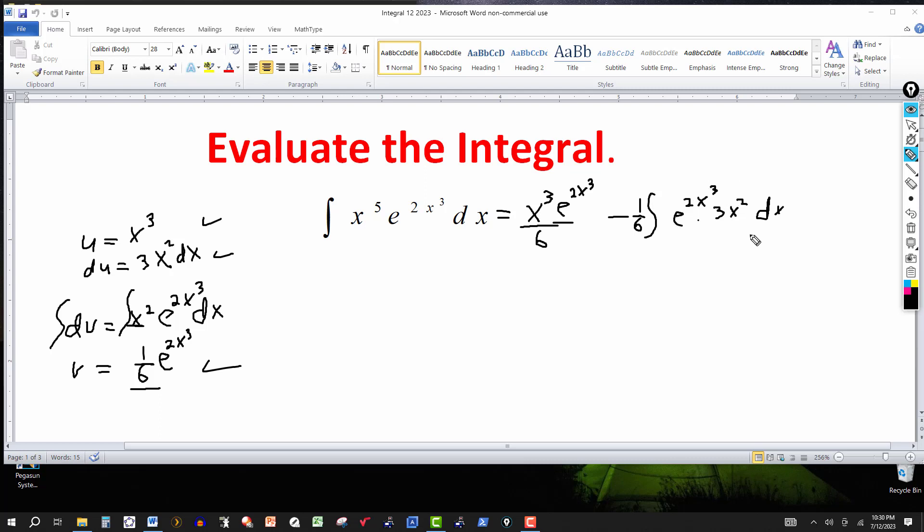Now we just have to integrate this right here. Notice again, the exponent of e is 2x cubed. And the coefficient is 3x squared. So the derivative of 2x cubed is 6x squared. And we've got the x squared in front. So we have this then, e to the 2x cubed power over 6.